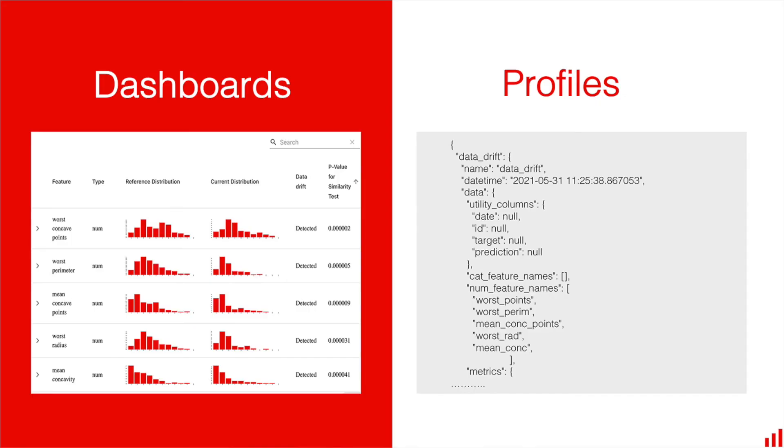In this case, Evidently will calculate all the metrics and statistical test results, and you can send the results elsewhere. For example, to a tool like MLflow.